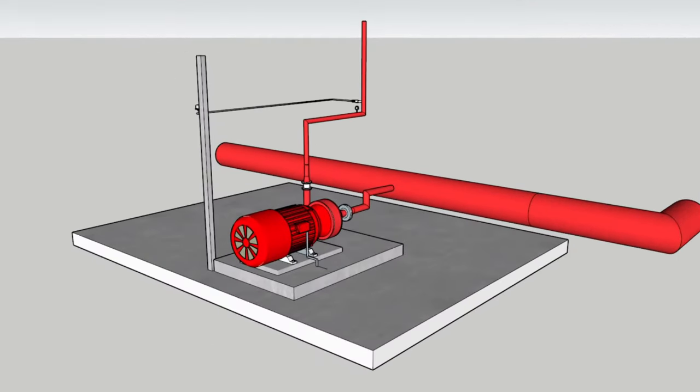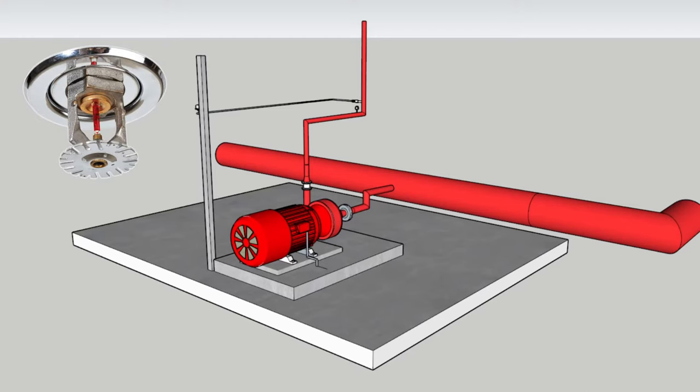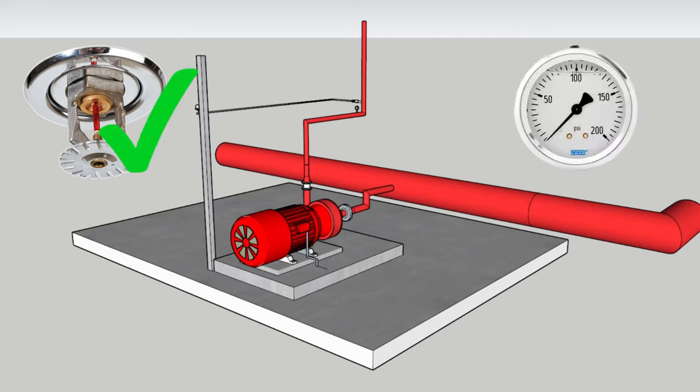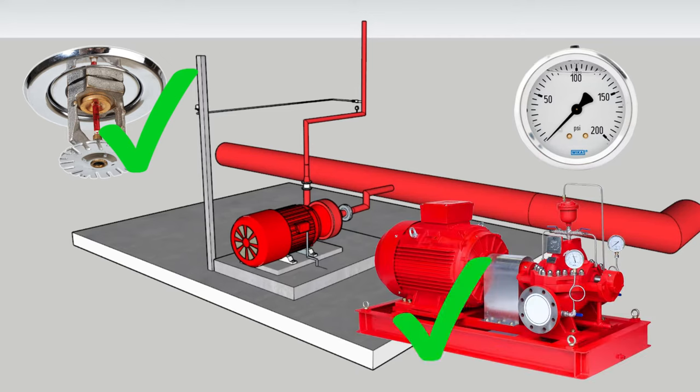A jockey pump is a small pump connected to a fire sprinkler system to maintain pressure in the sprinkler pipes. This ensures that if a fire sprinkler is activated, there will be a pressure drop, which will be sensed by the fire pump's automatic controller, which will cause the fire pump to start.